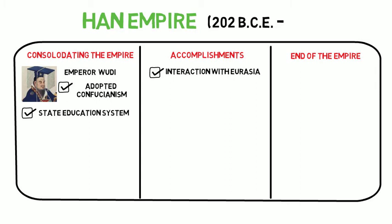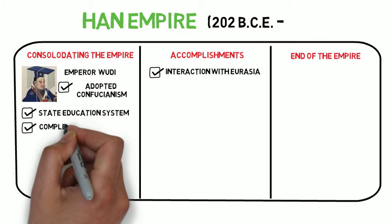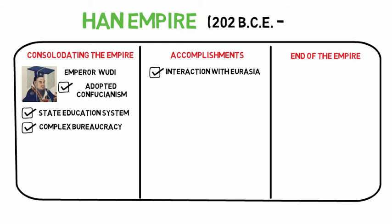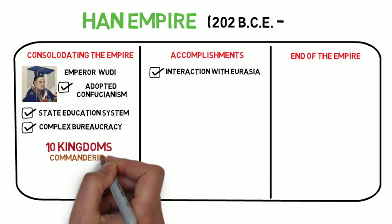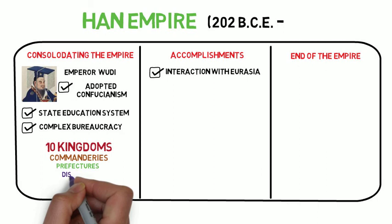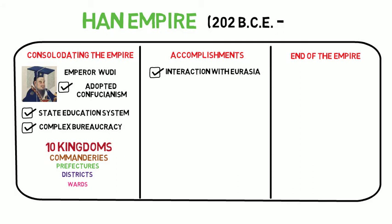The Han emperors organized a complex state bureaucracy where the empire was divided into 10 kingdoms. Kingdoms were further divided into 83 commanderies, which were divided into at least 1,587 prefectures. Prefectures were further divided into districts, and districts were divided into wards, each ruled by a state-trained bureaucrat. You should know that it was the most complex and organized administrative bureaucracy at the time.